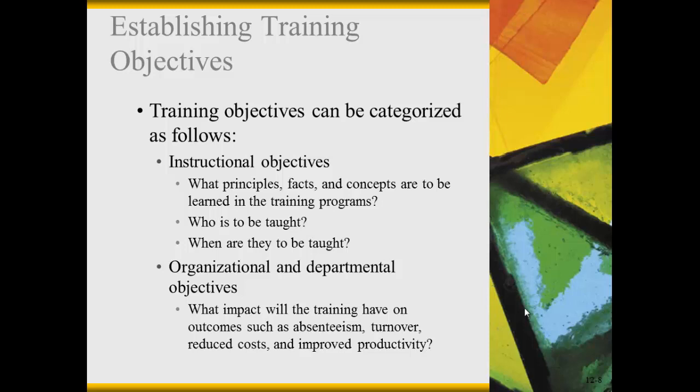There are two types of training objectives. The first are instructional objectives, which include concepts, facts, and hard data — things like product knowledge. For example, in one orientation I sat through, we were learning time recording devices: the different models, how they compared to each other, and how they were repaired — that kind of hard, fact-based material.